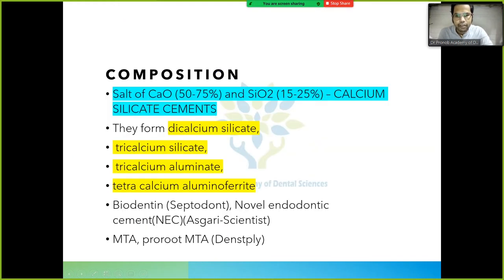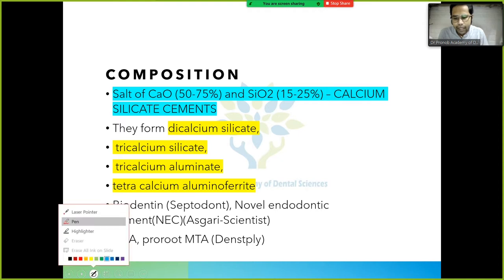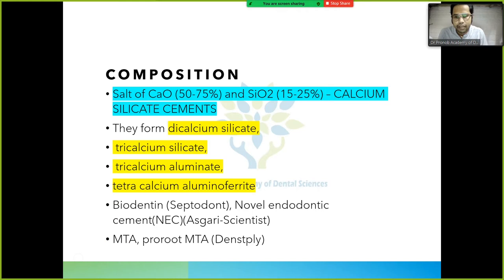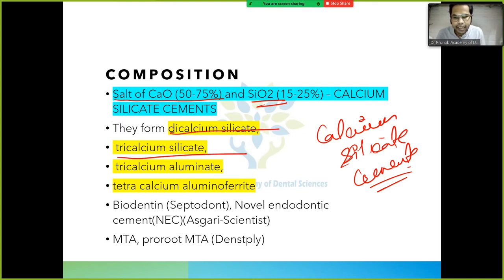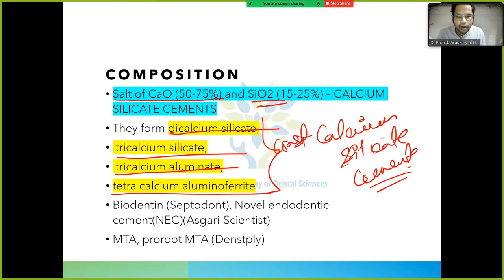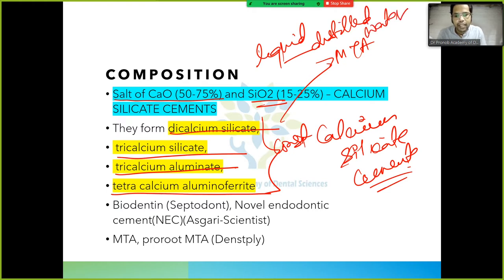The composition of MTA: it is a salt of calcium oxide and silicon dioxide, also known as calcium silicate cement. Its constituents include dicalcium silicate, tricalcium silicate, tricalcium aluminate, and tetracalcium aluminoferrate. The liquid used is distilled water. Trade names include Biodentine, novel endodontic cement, and ProRoot MTA.